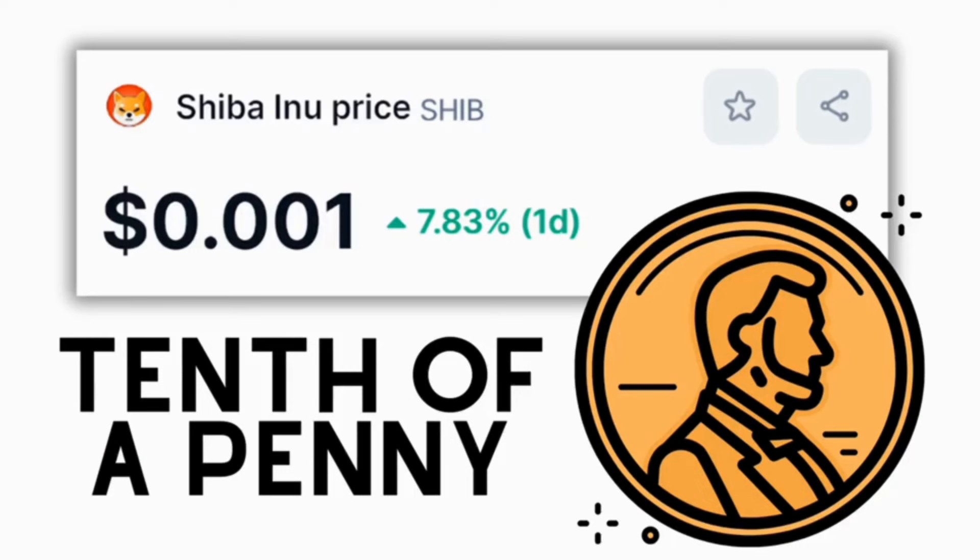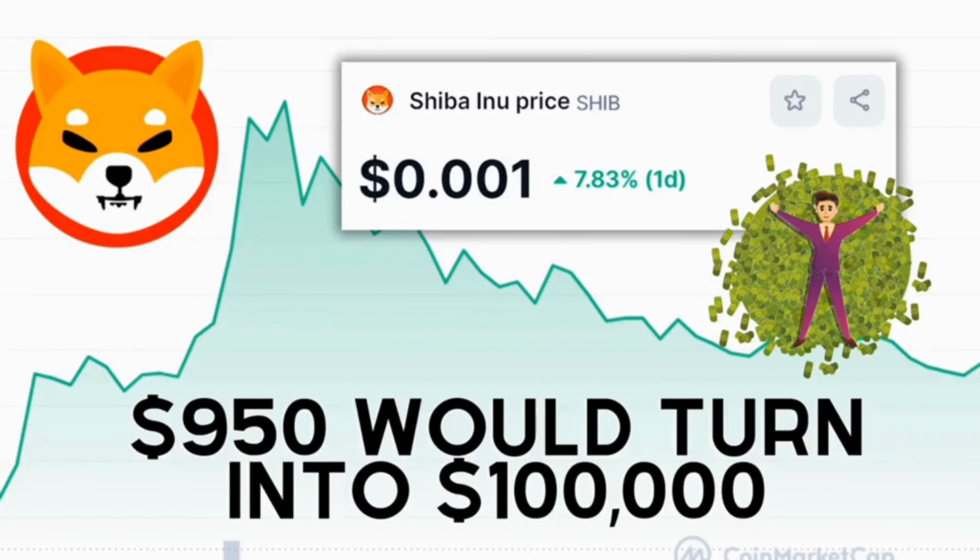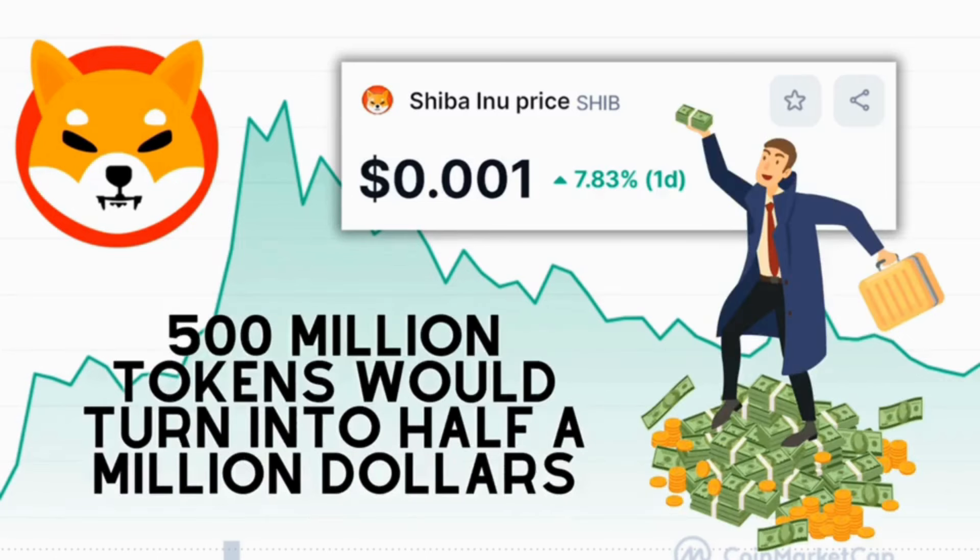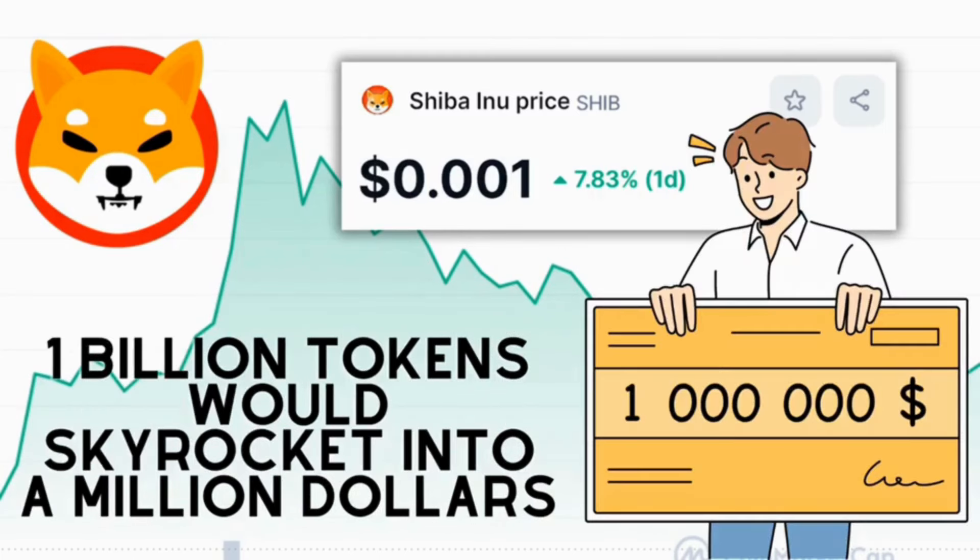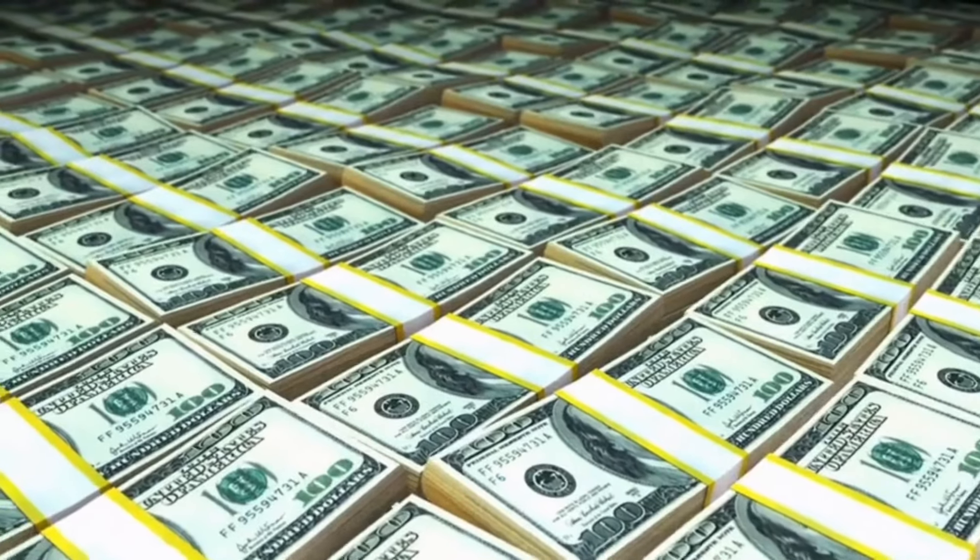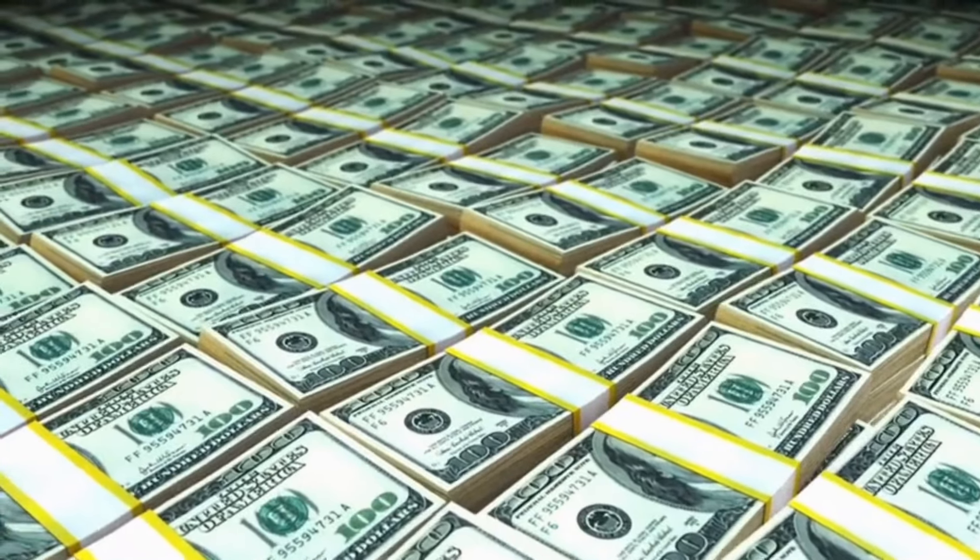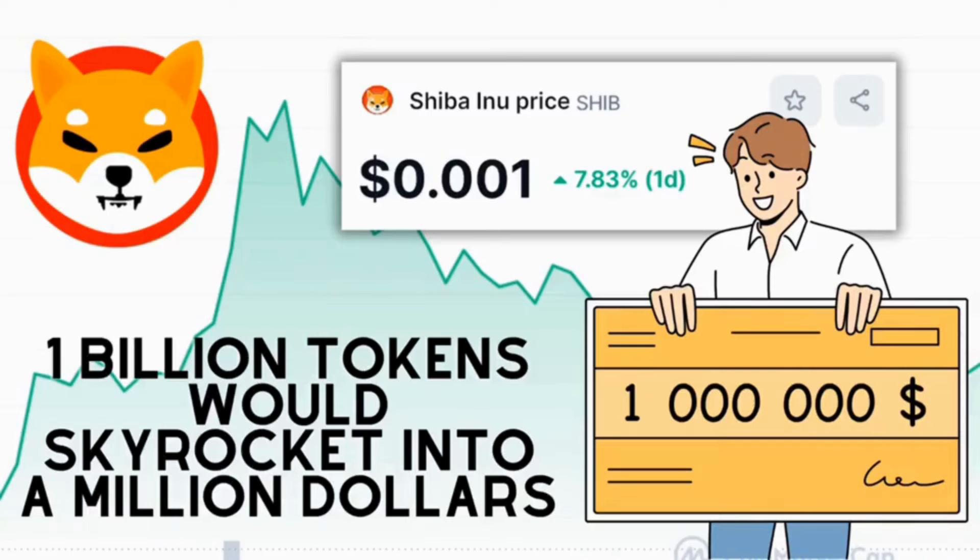Now, let's consider a scenario where Shiba Inu reaches the tenth of a penny price level. The potential worth of investments at this point becomes even more enticing. A holder of 100 million tokens, initially valued at around $950, could now be looking at $100,000. Those with 500 million tokens could see $500,000. And for the big players holding 1 billion tokens, their assets could skyrocket to an impressive $1 million.